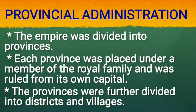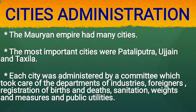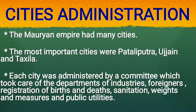Provincial Administration: The empire was divided into provinces. Each province was placed under a member of the royal family and was ruled from its own capital. The provinces were further divided into districts and villages. The most important cities were Patliputra, Ujjain and Takshashila. Patliputra was situated near the confluence — the meeting place of rivers Son and Ganga — and was well protected. Ujjain was situated on the trade route to the south and the western coast. Takshashila was an important trade center in the northwest.